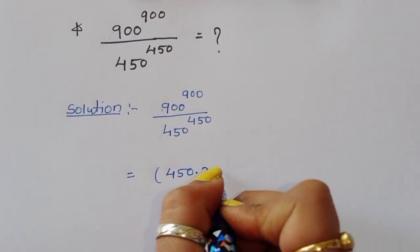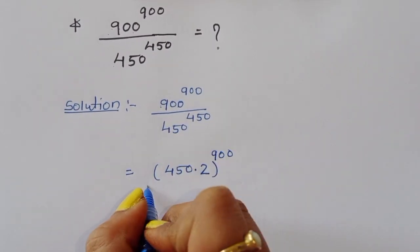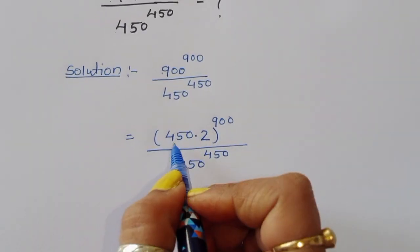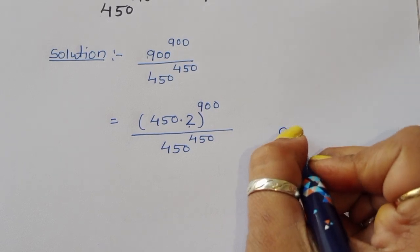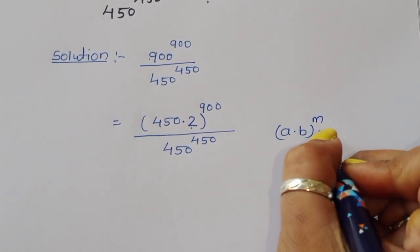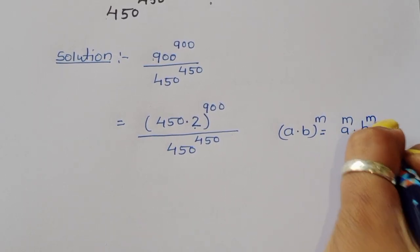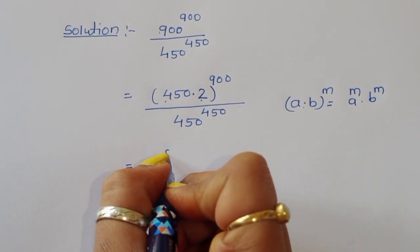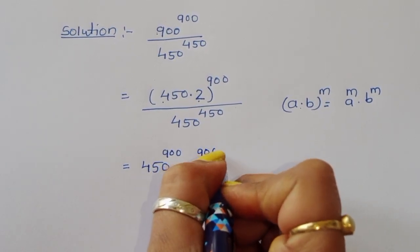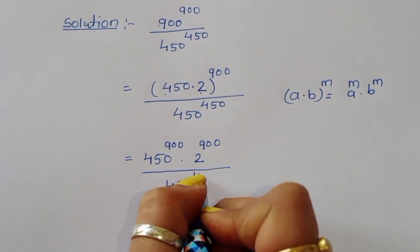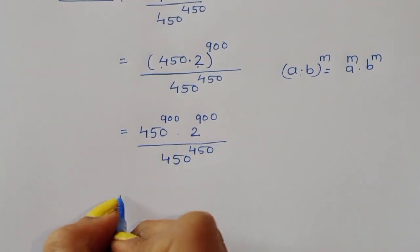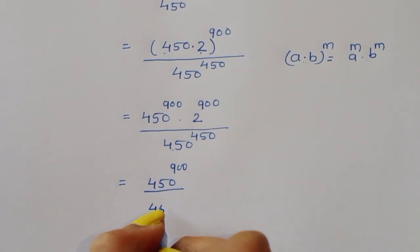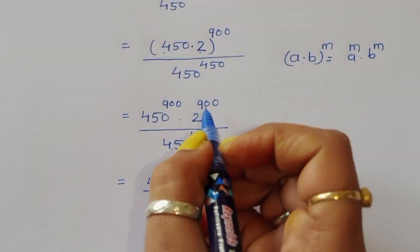So we have (450 × 2)^900 divided by 450^450. Now we apply the formula (a × b)^m = a^m × b^m. Using this formula, we get 450^900 × 2^900 divided by 450^450. We can separate these terms: 450^900 divided by 450^450, times 2^900.